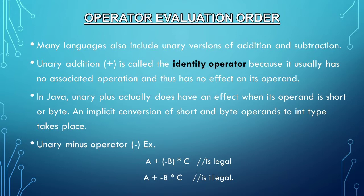But in Java, unary plus actually does have an effect when its operand is short or byte—an implicit conversion of short and byte operands to int type takes place. Here's a unary minus operator example: A plus (minus B) multiplied by C is legal. However, if the parentheses enclosing minus B are excluded, it is considered illegal.